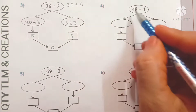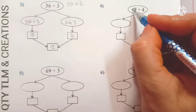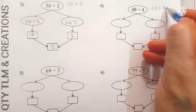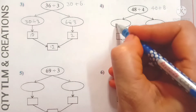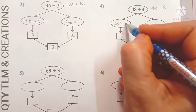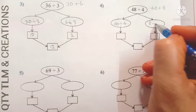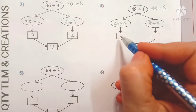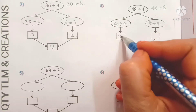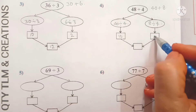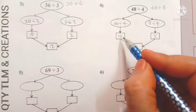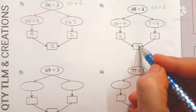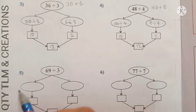Next: 48 divided by 4. So 4 divides 40 for 10 times, and 4 divides 8 for 2 times. We add 10 plus 2 and we get 12.